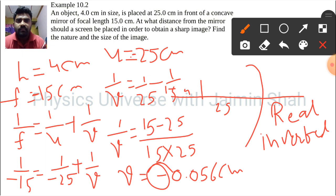Example, the image which was virtual—virtual means erect. Now real, real is always inverted. Then the size of the image—to find the size, we have to find magnification.